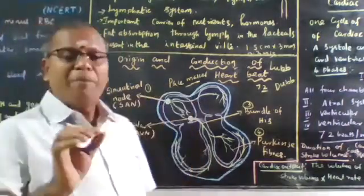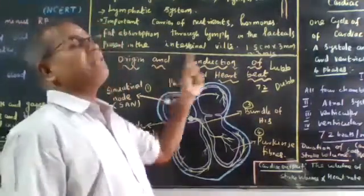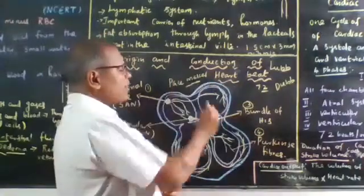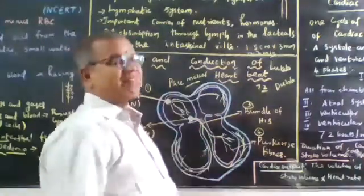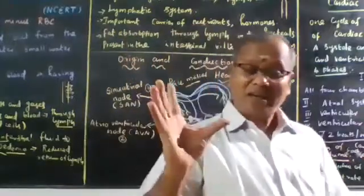Dub is a short and sharp sound caused by the closure of semilunar valves when the atria undergo contraction and ventricles undergo relaxation. Auricle contracts, ventricle relaxes.